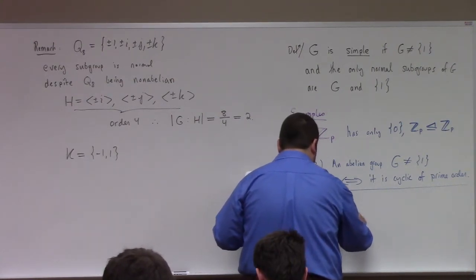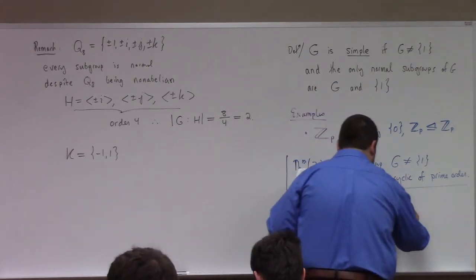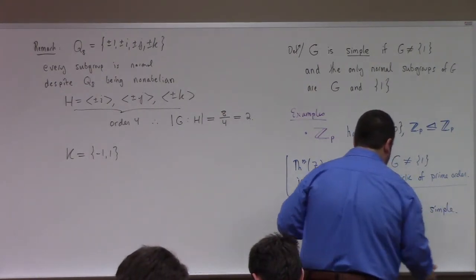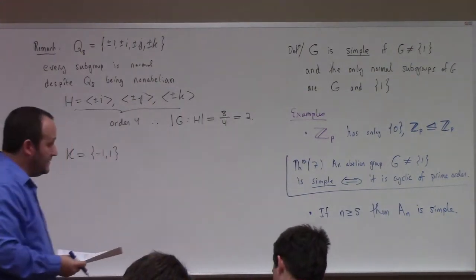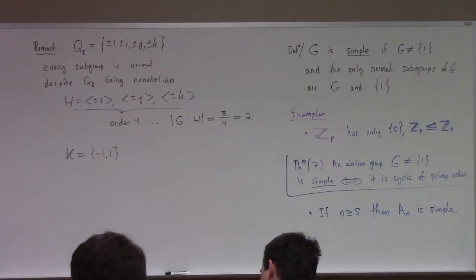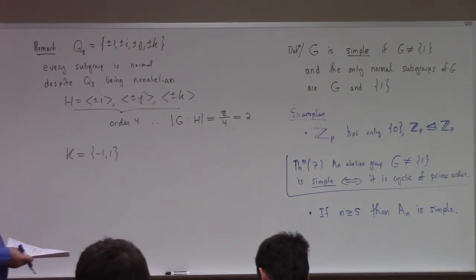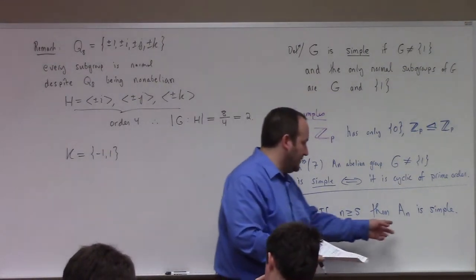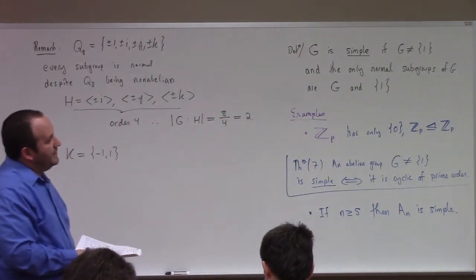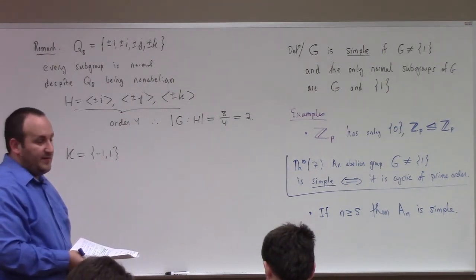If n is greater than or equal to 5, then An is simple. The end of section 2.8 spends about a page deriving this — it's a technical, gory cycle calculation which I invite you to read. It can be shown that the alternating group — the subgroup of even permutations in Sn — has no normal subgroups except itself and the identity, if n is greater than or equal to 5.